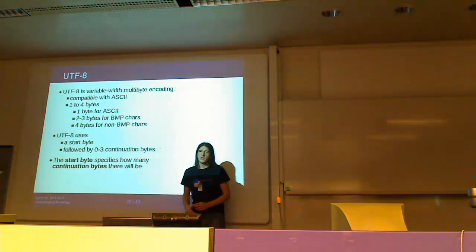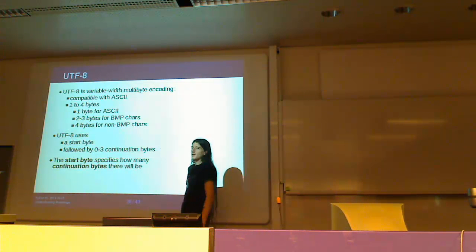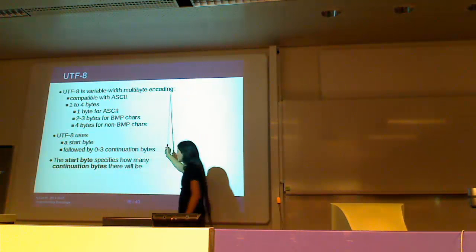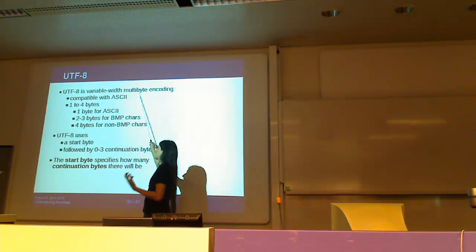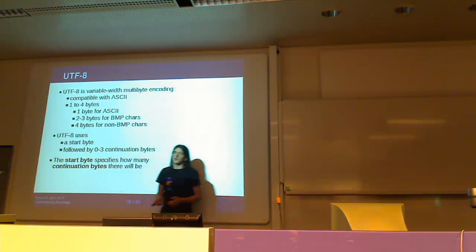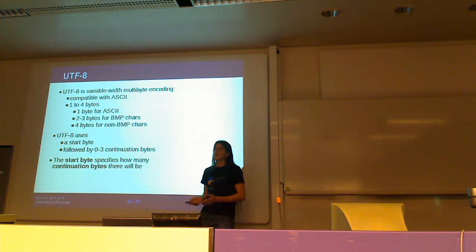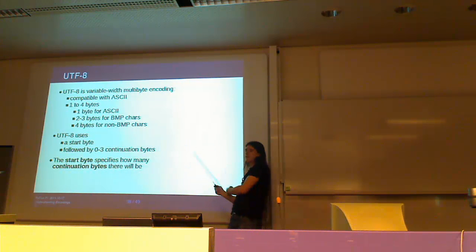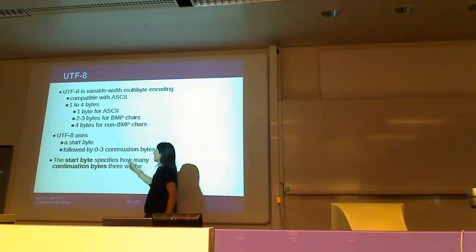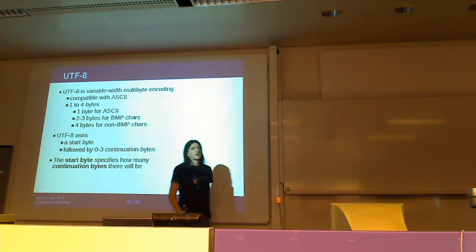Finally, let's look at UTF-8 — the coolest encoding ever and the most popular one. UTF-8 is a variable-width multi-byte encoding — it uses more than one byte to encode code points and can use one to four bytes. This makes it memory efficient. For the letter A, we saw that in UTF-32 it's zero, zero, zero, 61 — with UTF-8 you just have 61; you don't waste space on useless zeros. For ASCII, UTF-8 uses only one byte, and this means a really important thing: UTF-8 is compatible with ASCII.